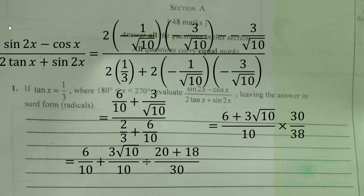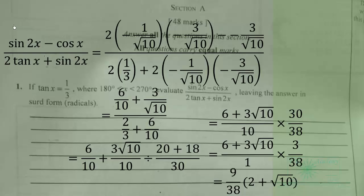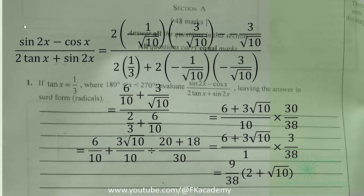So we have 3 over 38 times 6 plus 3 root 10, or we can simplify to 9 over 38 times 2 plus root 10, or we can factor that 3 out. So that is the value of sine 2x minus cos x over 2 tan x plus sine 2x.